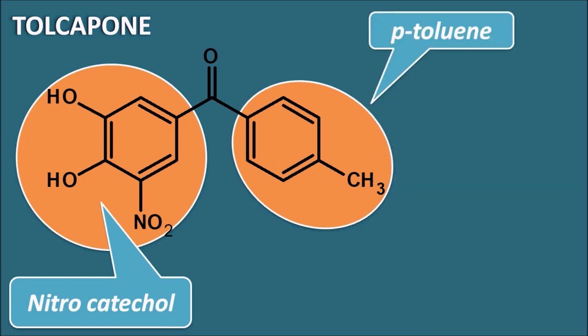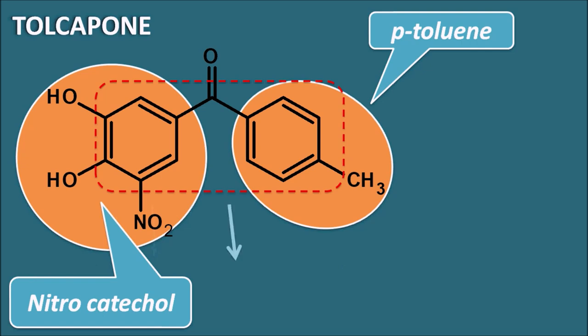Within the name tolcapone, 'TOL' indicates it is having the tolyl moiety. If you combine these two phenyl rings with a ketone, they form one central ring that is a benzophenone. So tolcapone is a nitrocatechol; on the other side it is having the tolyl moiety, and chemically it is also a benzophenone derivative.